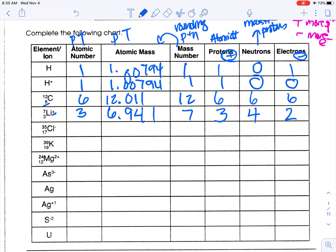The next one is chlorine. Atomic number is 17. Looking up the mass: 35.453. Rounding the mass number gives 35. Protons is 17. 35 minus 17 is 18 neutrons. We have a negative 1 charge here for chlorine, so we would normally have 17 electrons, but we have one more now to make it negative 1, so it's 18 electrons.